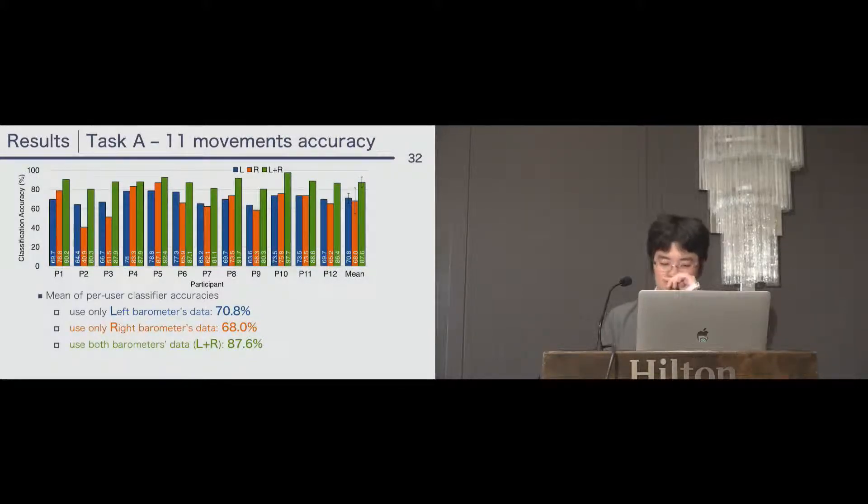This is experiment result. In the task A, we performed a per user classifier which uses users' own data and used leave-one-out cross validation to measure the accuracy. In addition, using both barometers data, that is L plus R, we measured the accuracy of using single barometer data, that is L or R. The mean of per user classifier accuracy is: using only left barometer data was 70.8%, and use only right barometer data, 68.0%, and use both barometer data was 87.6%. There are significant differences between using single barometer and both barometer data.